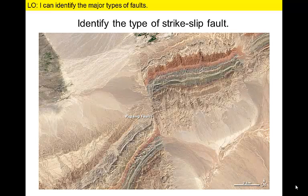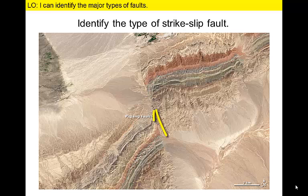Last one — are these colorful layers of rock offset by a right or left lateral strike-slip fault? If you were to walk to the end of one of these colorful layers in the lower part of the image, you would have to turn to your left to see the same layer in the upper part of the image. Consequently, this would be a left lateral fault.